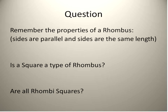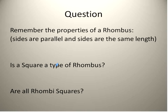Another question type you might see is to remember the properties of a rhombus. Not all sides are parallel, but there are two sets of parallel sides, and all sides are the same length. So is a square a type of rhombus? Yes — a square's sides are parallel and all the same length, so every square is a rhombus. But are all rhombi squares? No — there are several different types of rhombi that are not squares. These are the types of questions you'll typically see on exams.